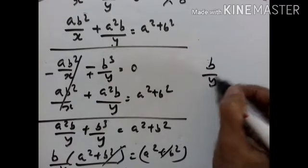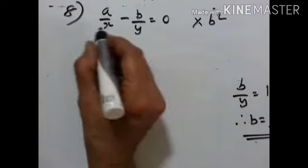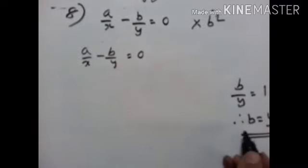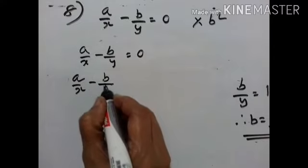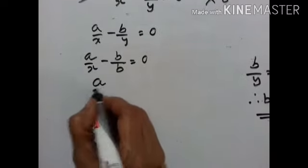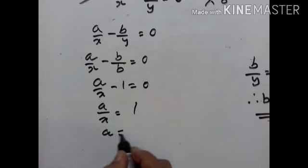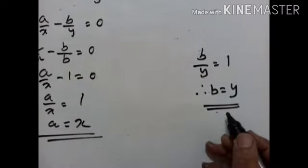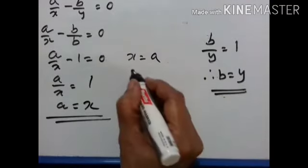The (a squared plus b squared) terms cancel, giving b upon y equals 1, therefore y equals b. Now taking the first equation: a upon x minus b upon y equals 0. Substituting y equals b: a upon x minus b upon b equals 0, so a upon x minus 1 equals 0, giving a upon x equals 1, therefore x equals a. So x equals a and y equals b.